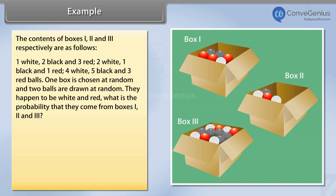They happen to be white and red. What is the probability that they come from boxes 1, 2 and 3?